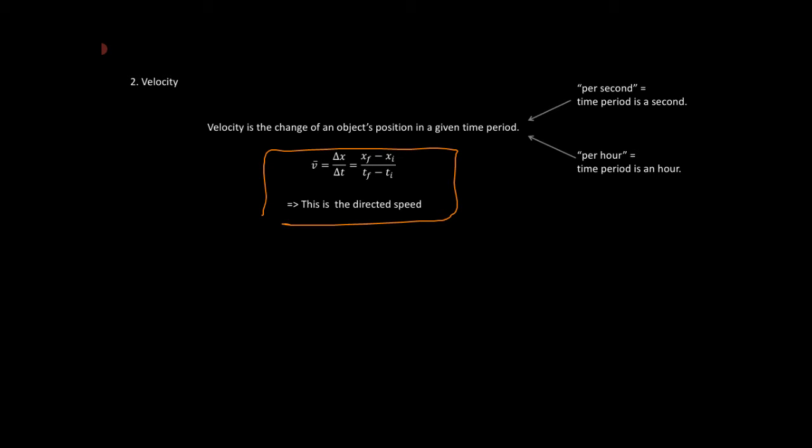This ends up being the directed speed. That is, remember we had before x is equal to plus or minus the absolute value of x. This was your distance from your origin. And the plus or minus was your direction - was it left or right?